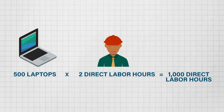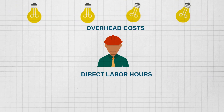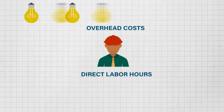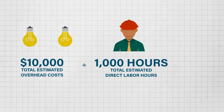Now that we've estimated our overhead cost and total direct labor hours, we do the following calculation: we divide total estimated overhead costs by our total estimated direct labor hours — $10,000 over 1,000 — which gives us $10 per hour.